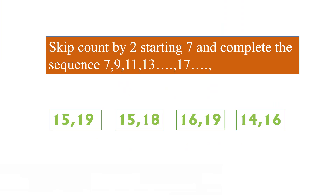The first problem: skip count by 2, starting at 7, and complete the sequence — 7, 9, 11, 13, then a blank, then 17, then a blank. The options are: 15 and 19, 15 and 18, 16 and 19, or 14 and 16. We have to skip count by 2, so first we add 2 to 13 and we get 15. Options one and two both have 15.